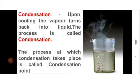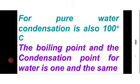Condensation: when water evaporates and then cools, it converts back into water again. This process is known as condensation. Condensation of steam also takes place at 100 degrees Celsius. This means that the boiling point and condensation point of water are one and the same. Students, note down this definition of boiling and condensation in your notebook.